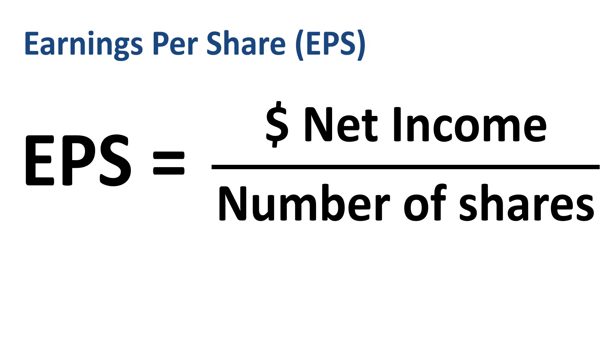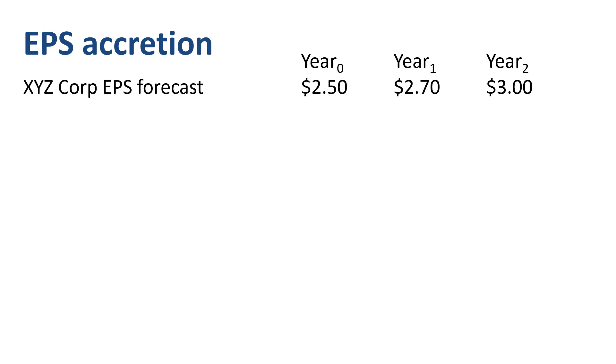Here's a numerical example of EPS accretion. The EPS forecast for the standalone company XYZ is $2.50 this year, $2.70 next year, and $3 two years from now.